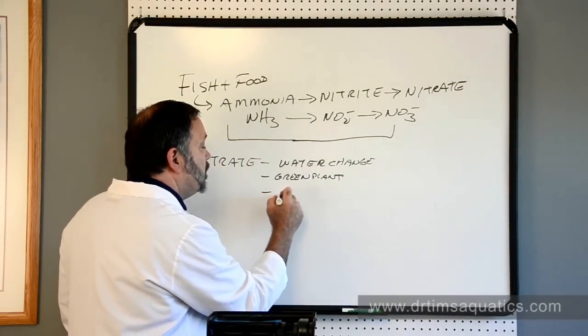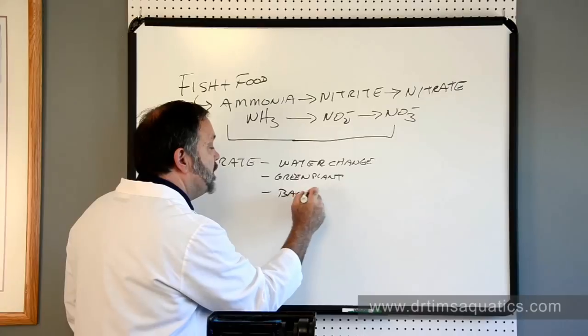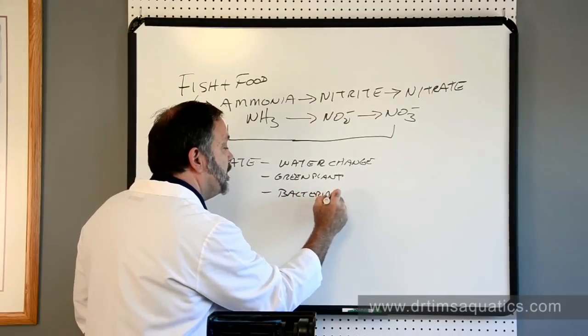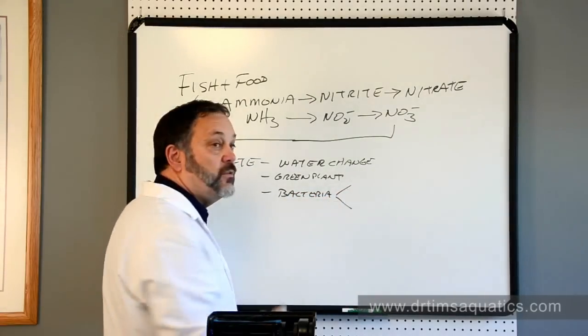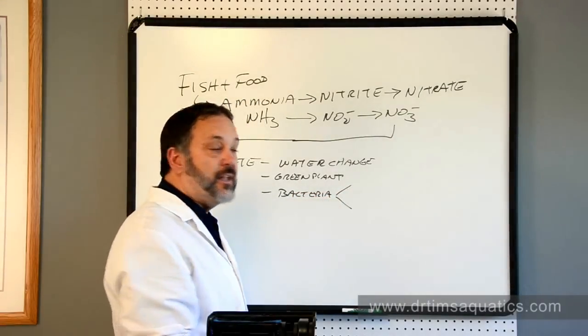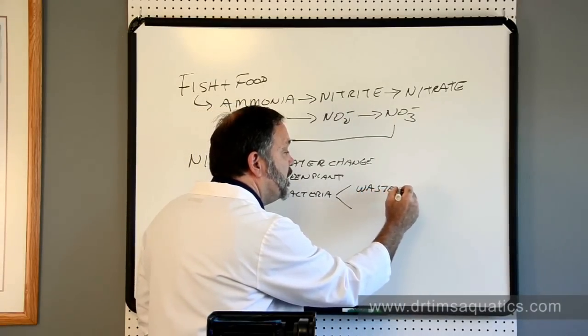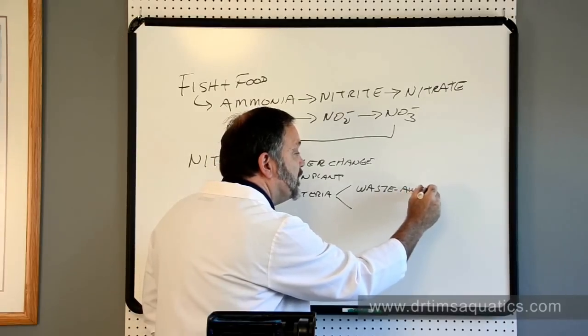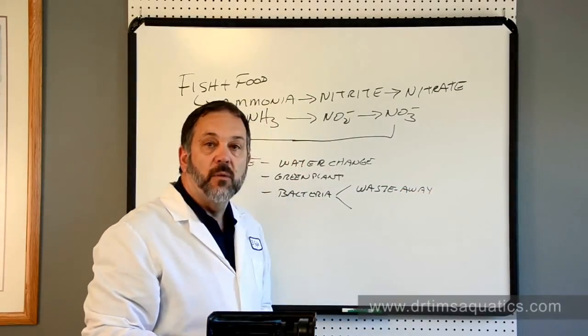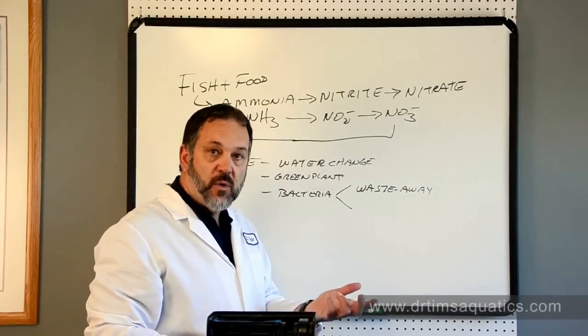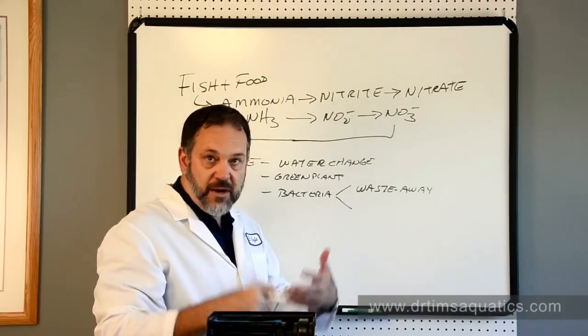Or you can use bacteria to get rid of the nitrate, and this can split off two ways. You can use assimilation, and that's what's behind waste-away. Here, what we're doing is adding bacteria that grow on nitrate to your aquarium, so they remove the nitrate as they grow.